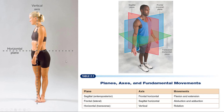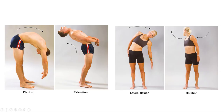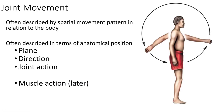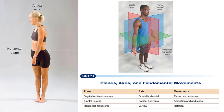The transverse plane is harder to see straight on, but if you tilt the image down you'd be able to see it. The planes, axes, and movements within those planes are how we start to describe human movement. We also have movement in the trunk and spine — flexion, extension, lateral flexion, and rotation. Joint movement is described by the spatial movement pattern relative to the body, so this coordinate system moves with the body.